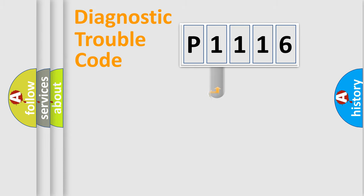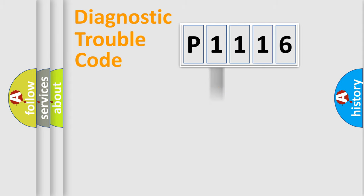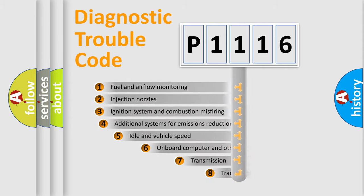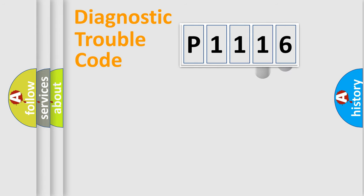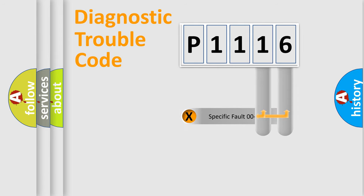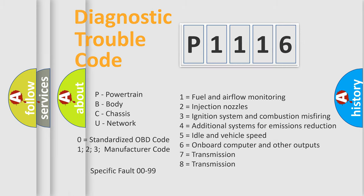This distribution is defined in the first character code. If the second character is expressed as zero, it is a standardized error. In the case of numbers 1, 2, or 3, it is a more specific expression of a car-specific error. The third character specifies a subset of errors. This distribution is valid only for the standardized DTC code, and only the last two characters define the specific fault of the group. This division is valid only if the second character code is expressed by the number zero.